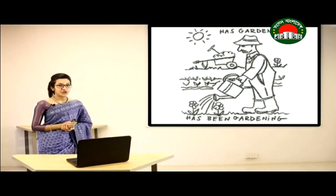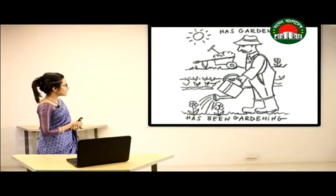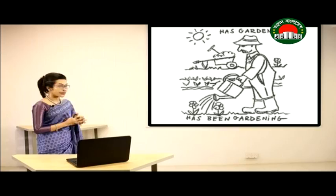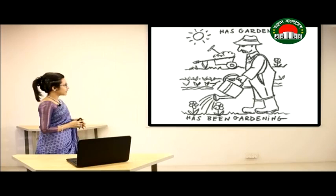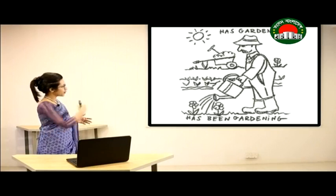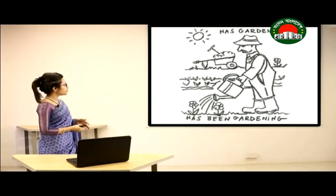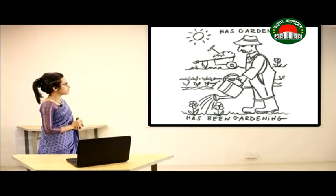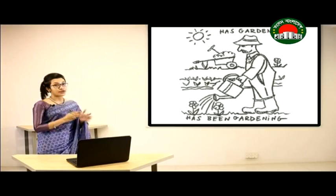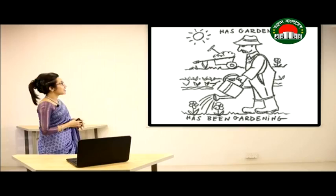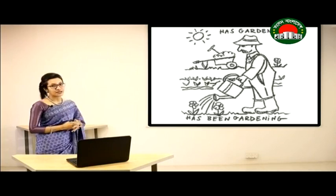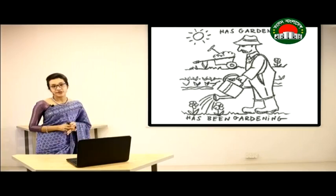In this picture, we can see a person who is watering a plant — he is doing something right now. On the other hand, there is another person who has finished his work. The first person's completed action is labeled as 'has gardened,' and the person who is still watering the plant is labeled as 'has been gardening.'